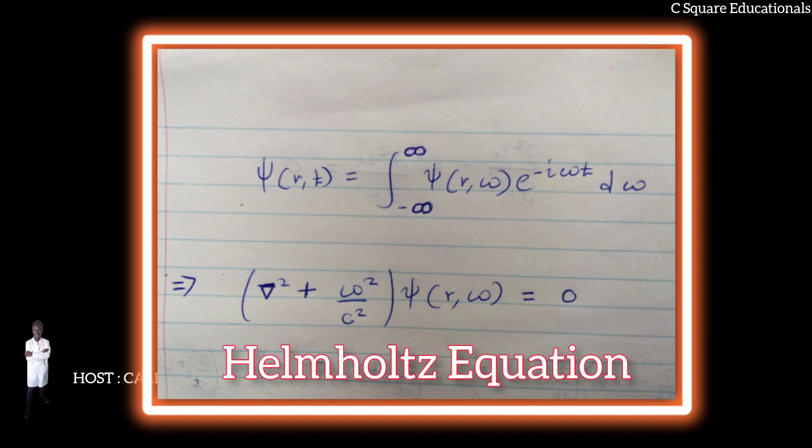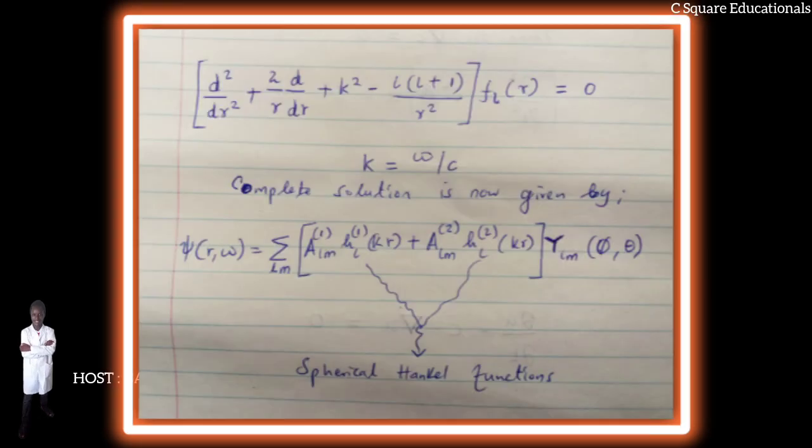If spherical coordinates are used to describe a problem, then the solution to the angular part of the Helmholtz equation is given by spherical harmonics, and the radial equation now becomes as shown.